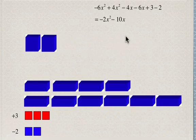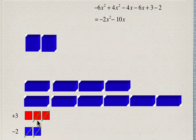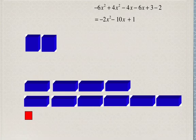Now we're going to do positive 3 minus 2. Each red square represents positive 1, and each blue square represents negative 1, so each of these is going to cancel another one out, and we're left with one red square, which represents positive 1.